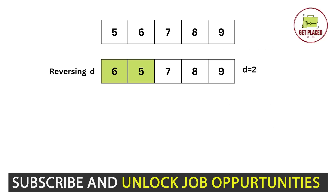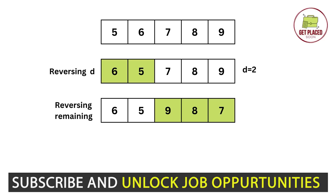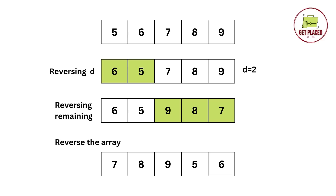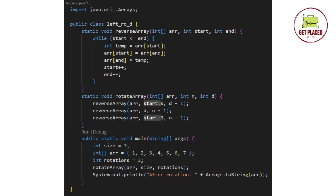We can reduce the space complexity using the reversal approach. Given array [5, 6, 7, 8, 9] and d equals 2: step one, reverse the first d elements — 5 6 becomes 6 5. Step two, reverse the last n minus d elements — 7 8 9 becomes 9 8 7. Step three, reverse the whole array — 6 5 9 8 7 becomes 7 8 9 5 6. This achieves left rotate by d places.